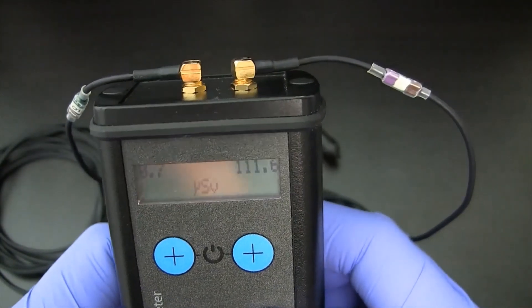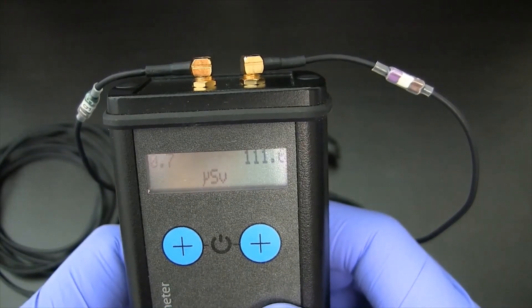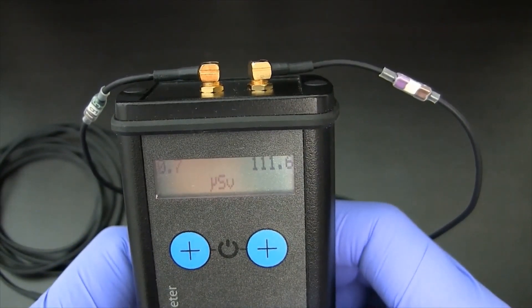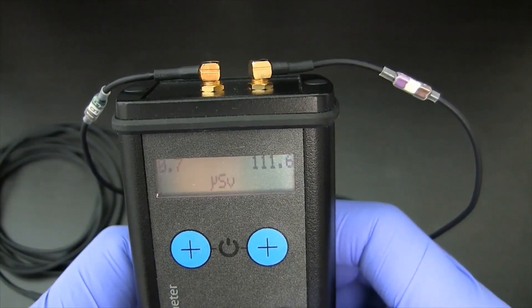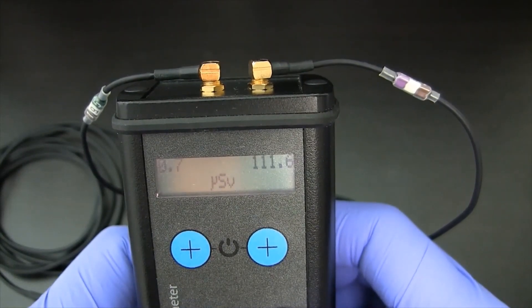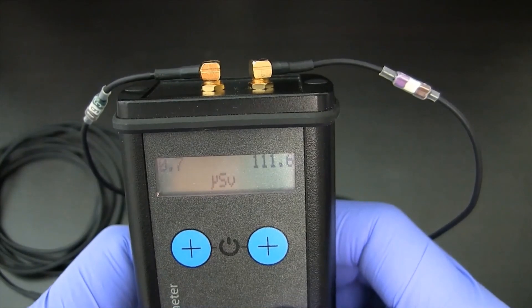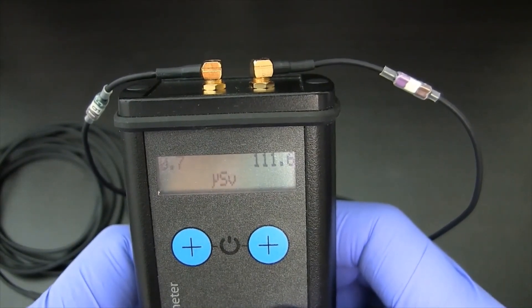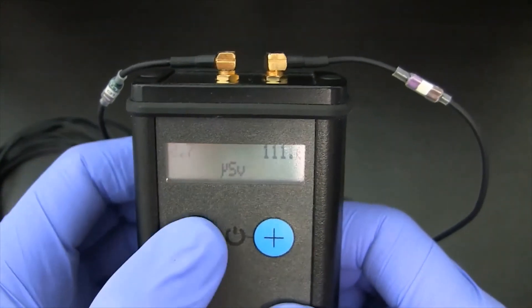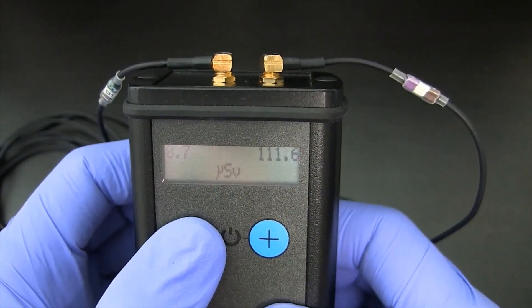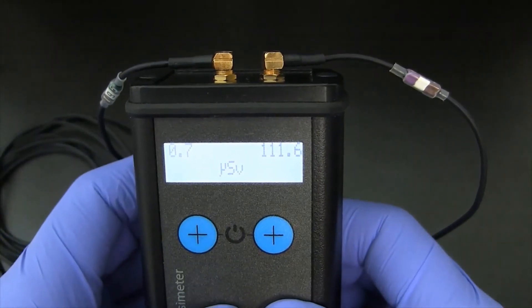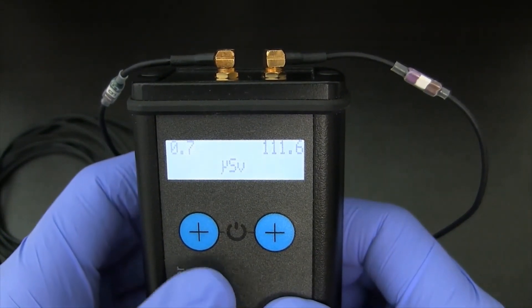You can see here that there's been some accumulated dose, and I have the units set to SI units. So I'm showing 0.7 and 111.6 microsieverts. Possibly I had my right hand as being my dominant hand closer to the radiation sources. By pressing on any of the buttons, I can turn on the backlight, which is a little bit harder for you to see the numbers. But also, if I hold down on the left button,